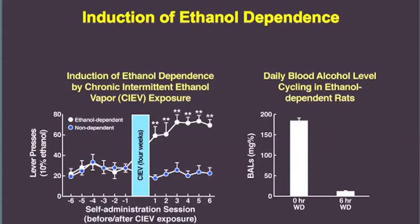Then we actually make them dependent by exposing them to ethanol vapors or an ethanol liquid diet. This is an example of ethanol vapors. We put them in the vapors for 14 hours a day, take them out for 10 hours a day, and we test them at 2 to 6 hours into withdrawal. What you can see is that the animals escalate their intake of alcohol, and they're taking pretty strong amounts — maintaining blood alcohol levels around 150 milligram percent,